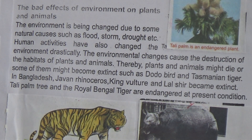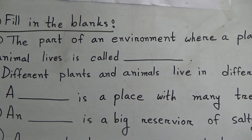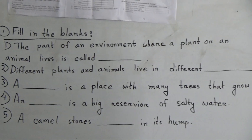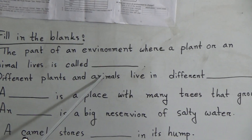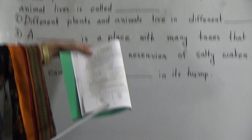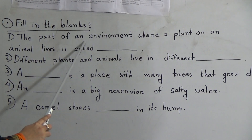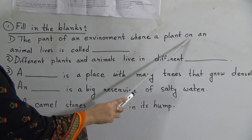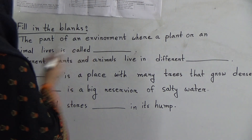I have finished reading chapter 2. Now today we will do fill in the blanks of this chapter. The fill in the blanks are on page number 20. Number one: the part of an environment where a plant or an animal lives is called — the answer is habitat.